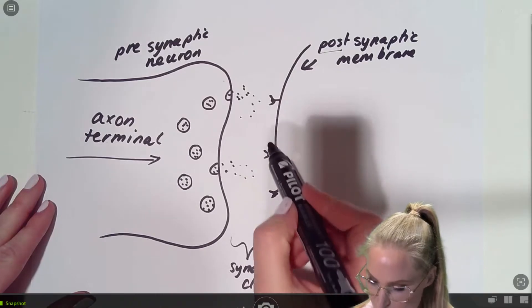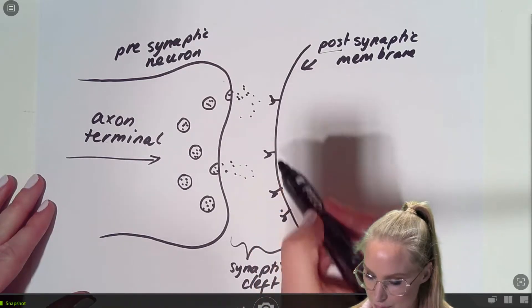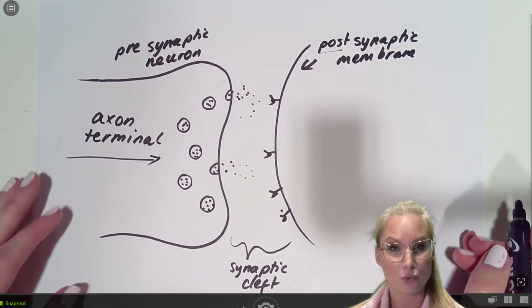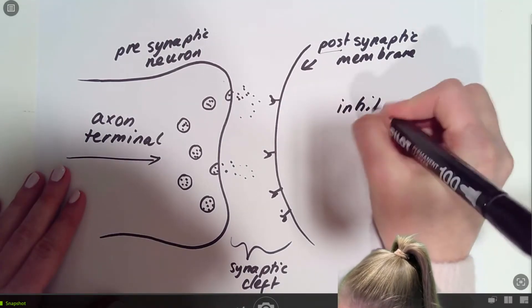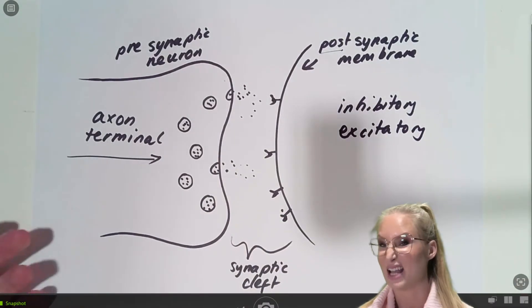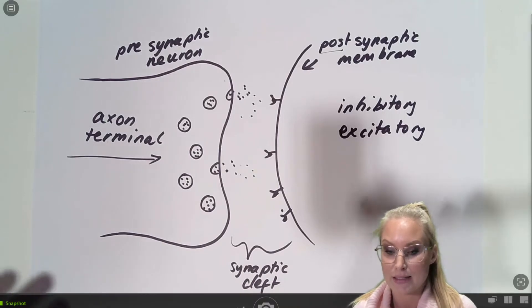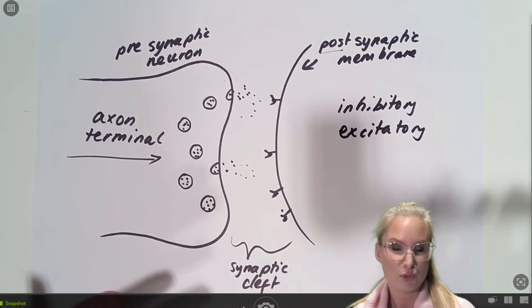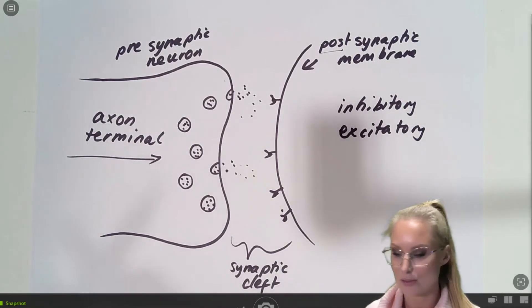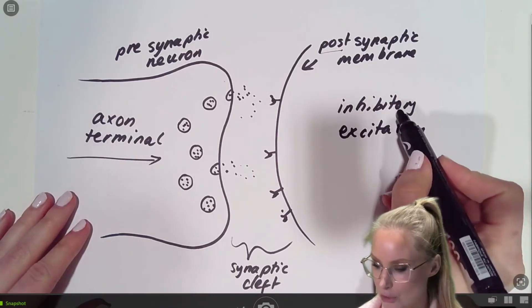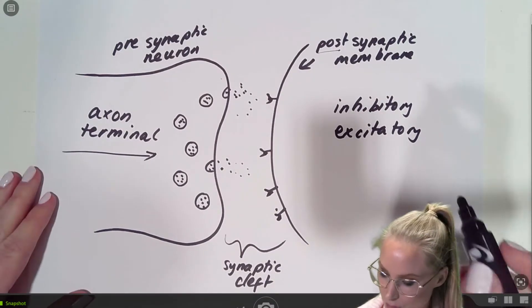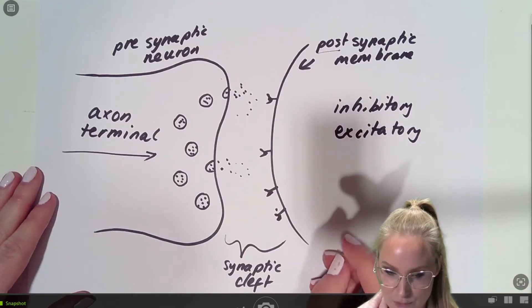So we have these neurotransmitters binding to these receptors on the postsynaptic membrane. And those neurotransmitters might either be excitatory or inhibitory. And as the name suggests, the excitatory ones means that this target cell is going to be, or probably a neuron, is probably going to be more likely to send a signal to be activated and to send a signal down, whereas an inhibitory neurotransmitter means it's going to be less likely to be activated. So that's the two different types of neurotransmitters.